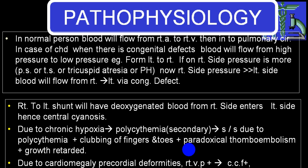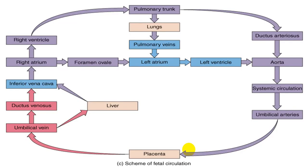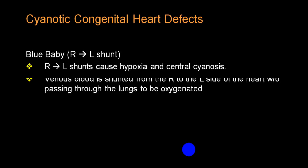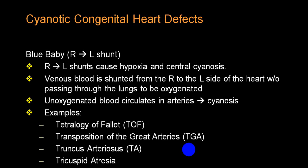In tricuspid atresia or Ebstein anomaly, blood flow from the RA will directly enter the LA — the RV chamber will not be much affected and is usually hypoplastic, as is the pulmonary artery. Blood flows from RA to LA, from LA to LV. Either through a VSD, blood from LV enters RV then pulmonary circulation, or via PDA from the aorta it enters pulmonary circulation, gets oxygenated, and comes back to the left side. In severe pulmonary stenosis or pulmonary atresia, blood from RV cannot enter pulmonary circulation, so through VSD it enters LV, from LV into the aorta, and via PDA into pulmonary circulation.